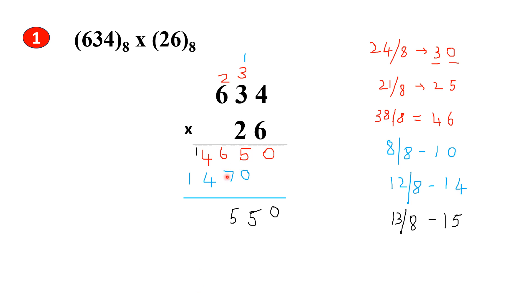Now add 4 plus 4 plus 1, that is 9. 9 is not an octal number. So 9 divided by 8 gives us 1 as the quotient and 1 as the remainder. Put 1 here and 1 here. So 1 plus 1 gives us 2. This is the answer for Problem 1.